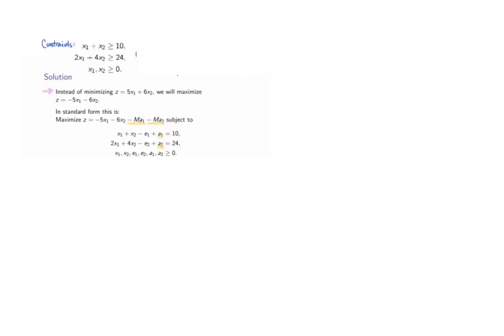Since we have included two artificial variables, we need to subtract M times a1 and subtract M times a2 to the objective function of our maximization problem. The linear programming problem in standard form is shown here.